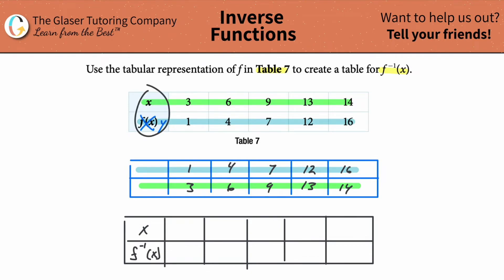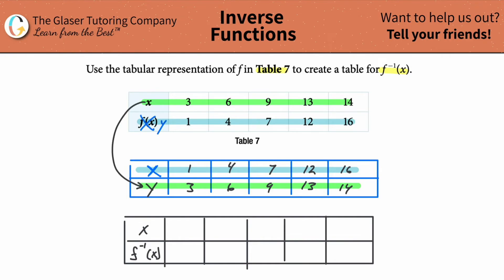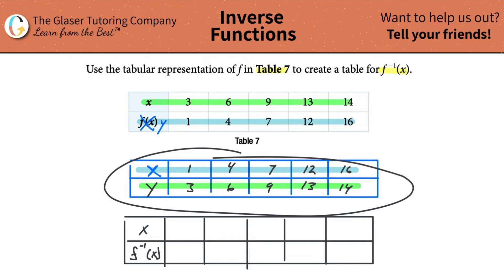So basically now, what's going to happen with these? This is the blue y value from the original, and this represents now the black x value. However, I'm not going to call this y anymore — the x values and the y values technically switch. So what this is going to become is not y, but the new x value. I left it in blue to show you that the y's are becoming the x's, and black to show that the x's are becoming the y's. This is now the table for the inverse function.